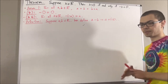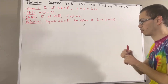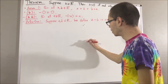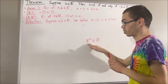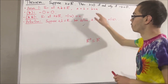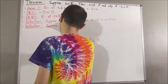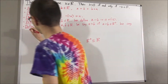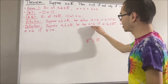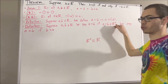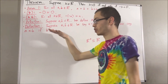Now, our real number system is equipped with a subset that we call the set of positive real numbers, and it's denoted as R-plus. Using the set of positive real numbers, our definition of greater than and less than are as follows. Suppose a and b are real numbers. We say a is greater than b if a minus b is a positive real number. We say a is less than b if b is greater than a.